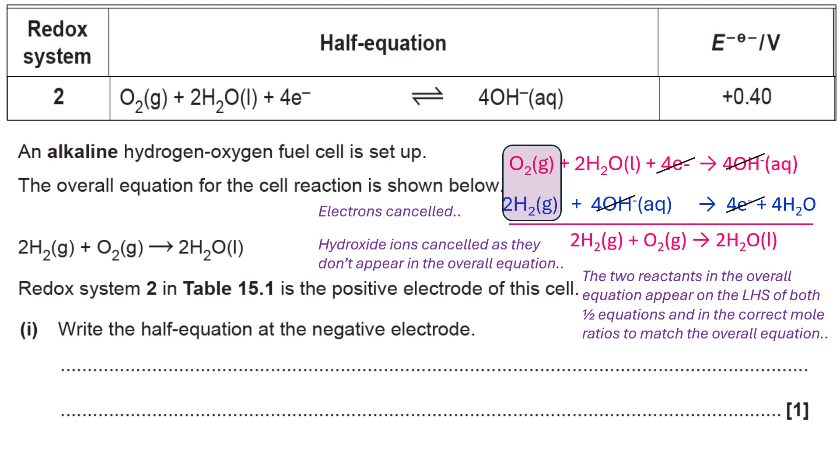Now, the only other thing to think about is the water. There are two waters on the right hand side of my overall cell equation. So what do I need to do? Well, obviously, I cancel the waters in the top there. And I cancel the four out and just replace it with a two. So that now gives me my overall cell reaction.